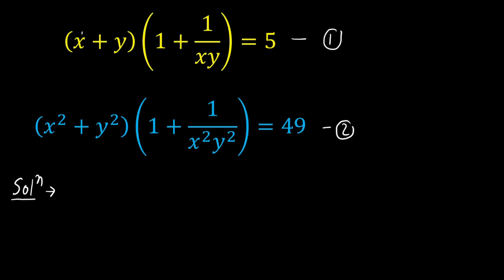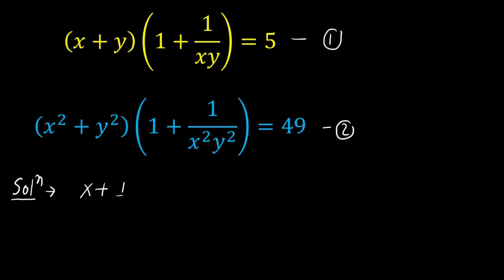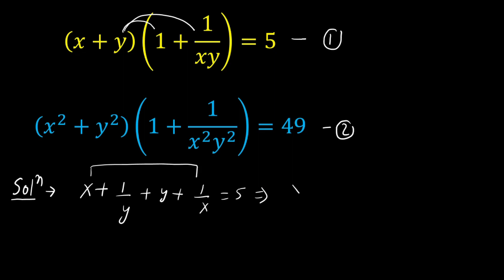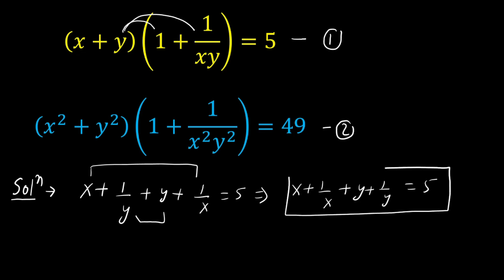Expanding equation 1: x multiplied by 1 gives x, x multiplied by 1/xy gives 1/y, y multiplied by 1 gives y, and y multiplied by 1/xy gives 1/x. So we get x + 1/x + y + 1/y = 5. Let us consider this equation 3.